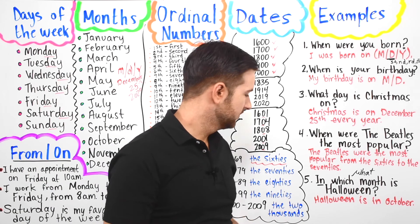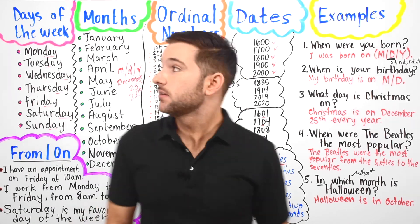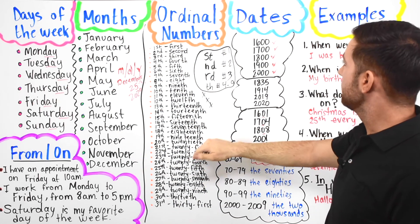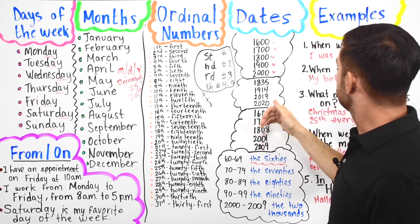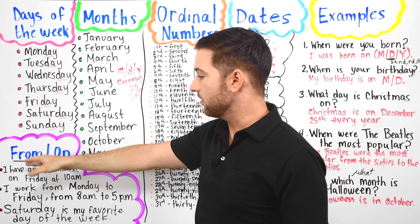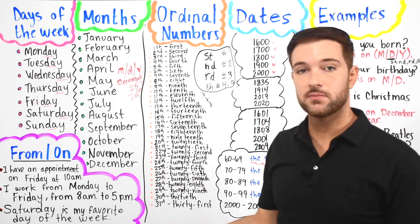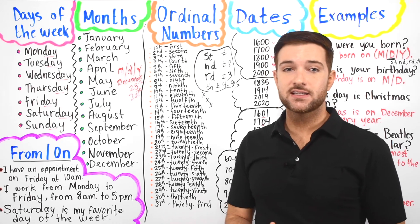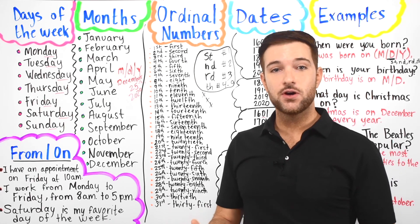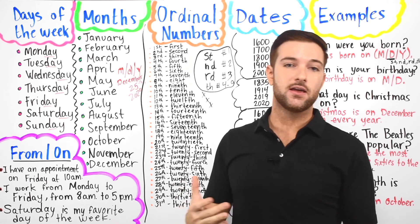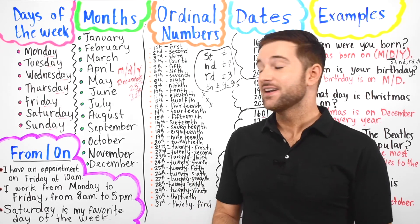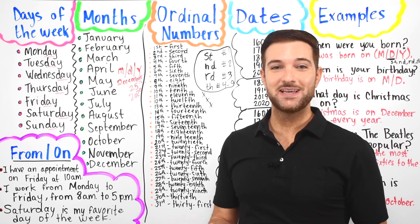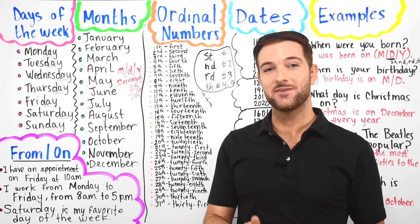That's pretty much it for this lesson. We covered days of the week, months, ordinal numbers, dates, and remember we have 'from' to talk about when something begins, and 'on' to talk about a specific day of the month. I hope you now know how to talk about days, months, numbers, and years. Thank you so much for watching, and I'll see you next time. Like and subscribe if you liked this video. Bye!